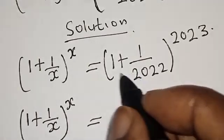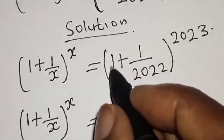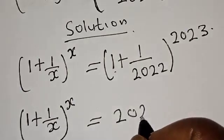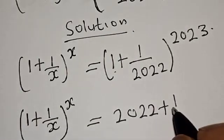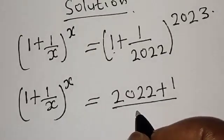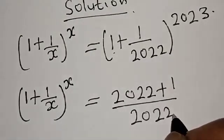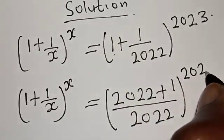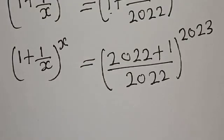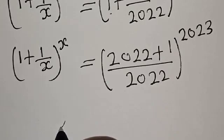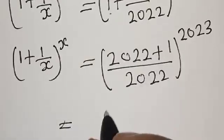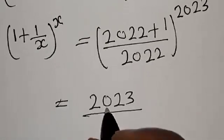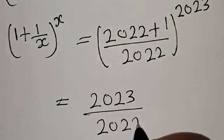Finding the common denominator on the right hand side: 1 + 1/2022 becomes (2022 + 1)/2022, which is 2023/2022. So the right hand side becomes (2023/2022)^2023.